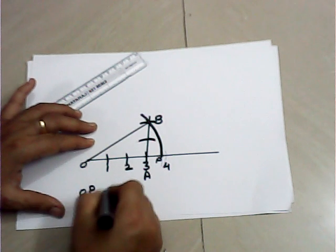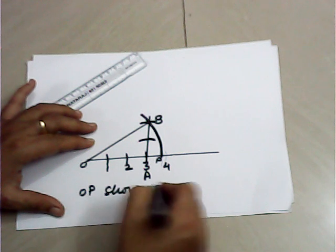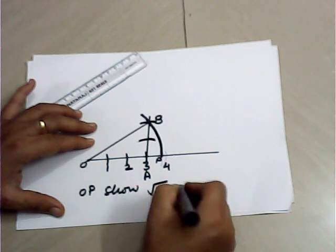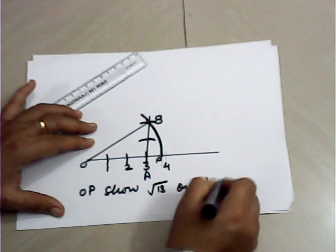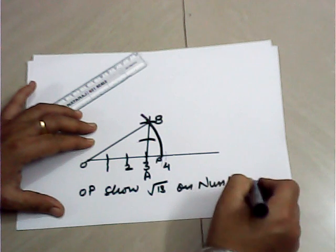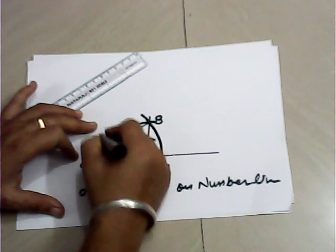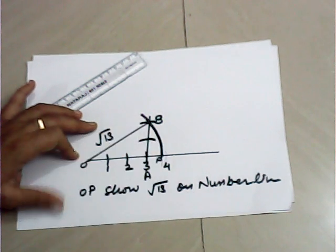Then OP shows √13 on the number line. Here this is √13. Thank you.